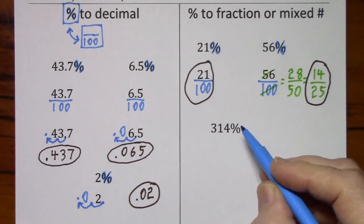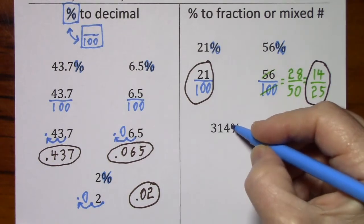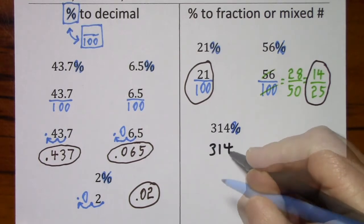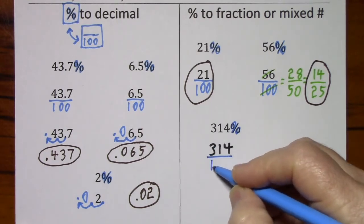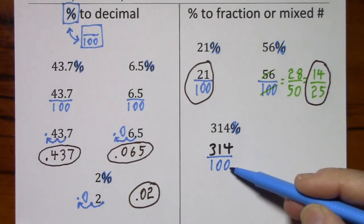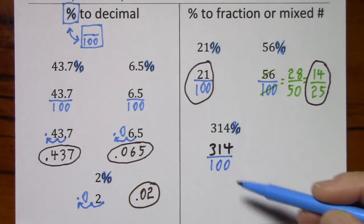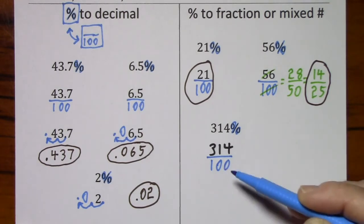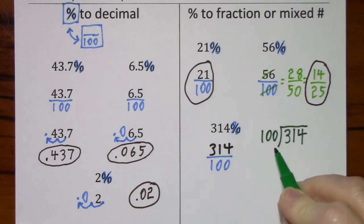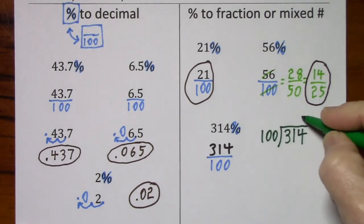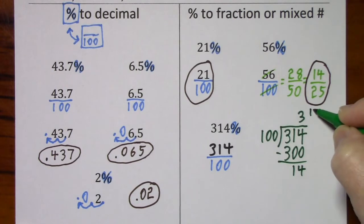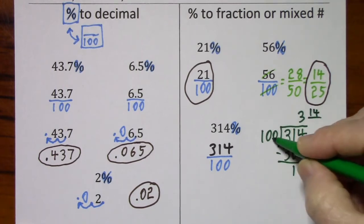With 314%, if I want to get rid of this percent sign, I'll simply write 314 over 100. I could just start reducing because they certainly have a common factor of 2, but dividing by 100 goes pretty quickly. So I'm just going to do the division. 100 goes into 314 three times. You have 14 left over.